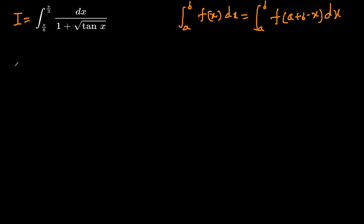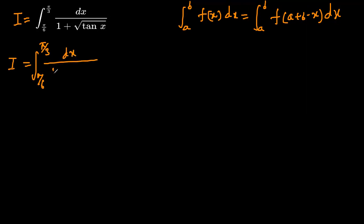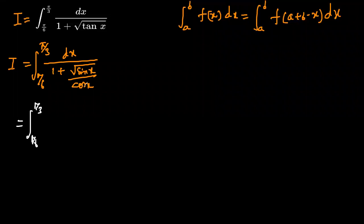Now tan x can be written as sin x over cos x, so we can write our integral I as integration from π/6 to π/3 of dx over 1 plus under root of sin x divided by cos x, which is the same as integration from π/6 to π/3 with under root cos x in the numerator.